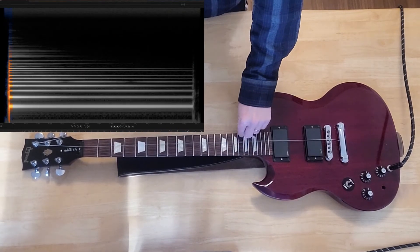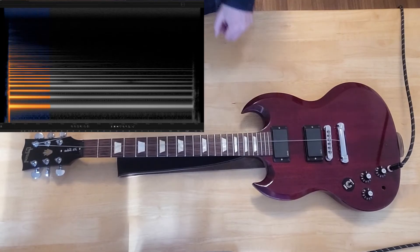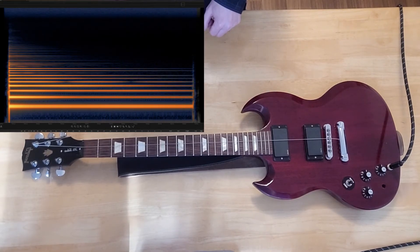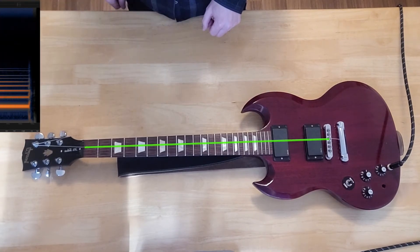When we pluck the string, we give it energy to start vibrating, and at first few moments, it vibrates at almost all frequencies. But very quickly, vibrations at most frequencies lose their energy. This happens because in order to vibrate at those frequencies, the string has to move up and down at the ends, which are held by the bridge and the nut of the guitar.